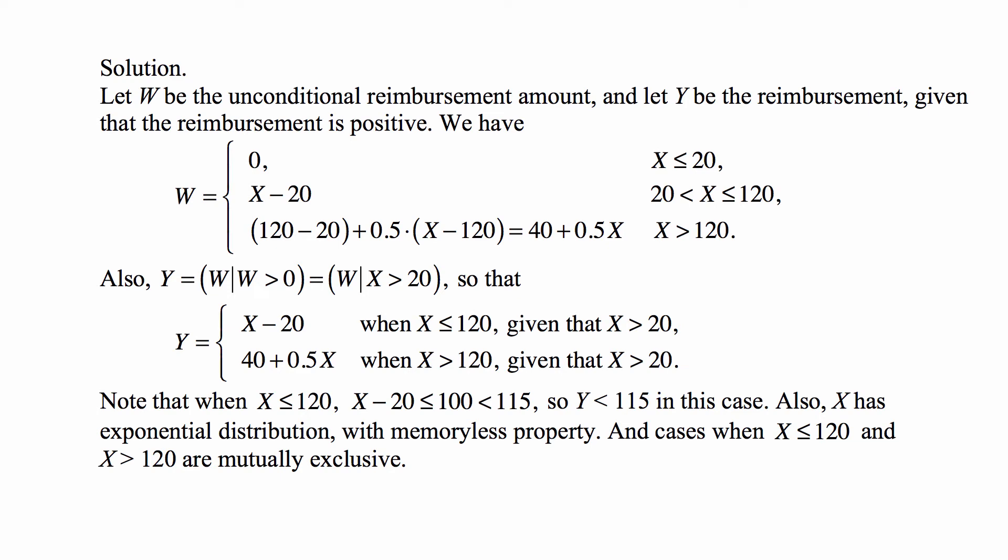X has an exponential distribution with the memoryless property. What does that mean? It means that if x has reached a certain value t, the probability that it will reach a greater value t plus s, given that it reached t, is the same as reaching the value s starting from time 0. Also, the cases when x is less than or equal to 120 and when x is greater than 120 are mutually exclusive.